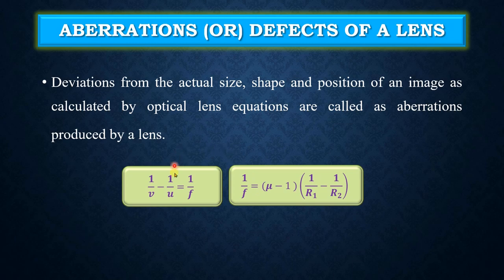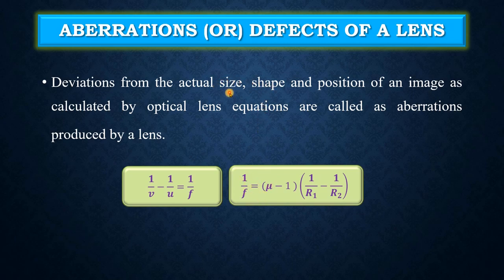These equations are approximated for thin lenses, meaning they are strictly valid for only thin lenses. There would be some changes in the size, shape or position of the image compared to what these equations predict.